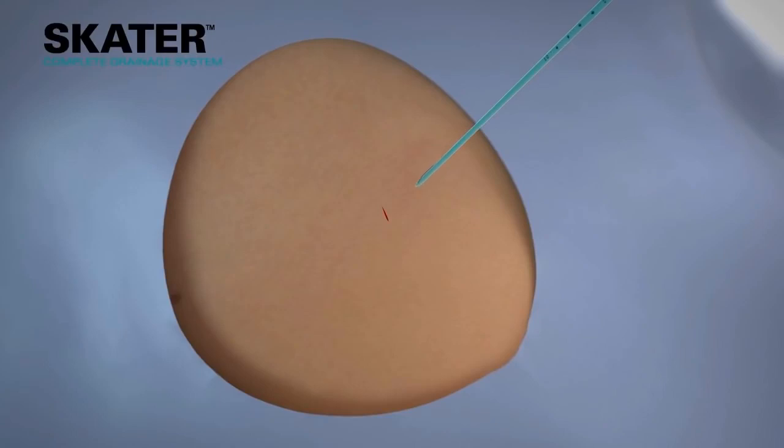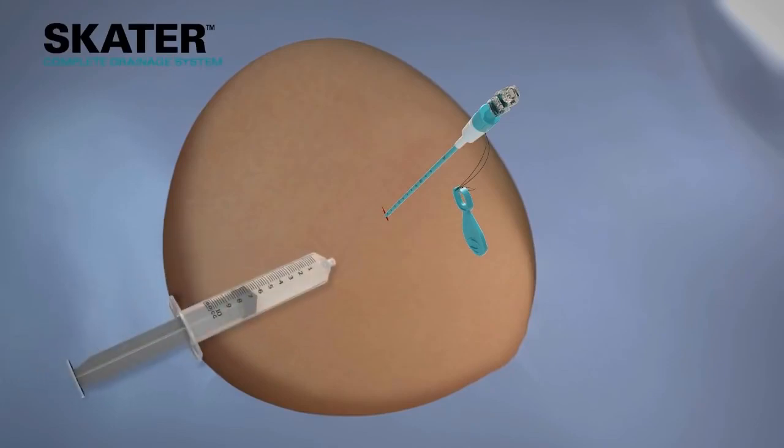The assembled catheter cannula trocar stylet is advanced into the body using ultrasound or other image guidance. After insertion, the trocar stylet is removed by releasing the choice lock from the cannula hub. Check that fluid is escaping or aspirate with the syringe to verify placement.